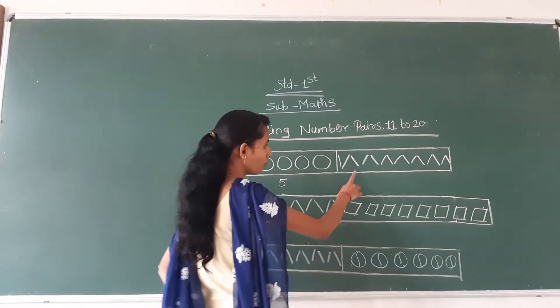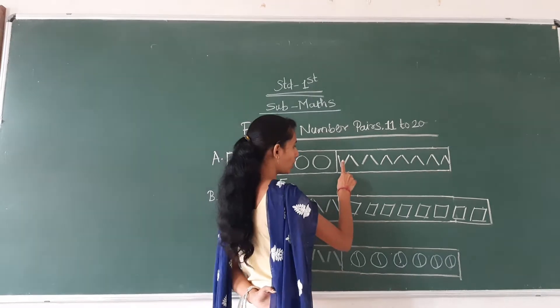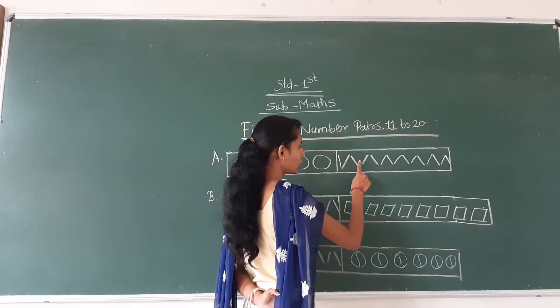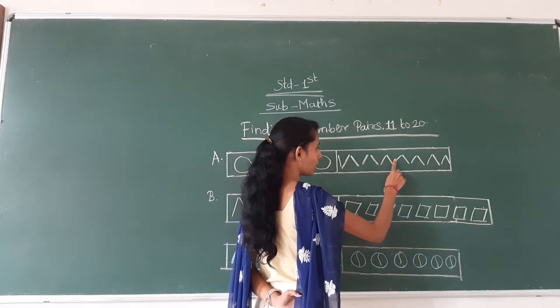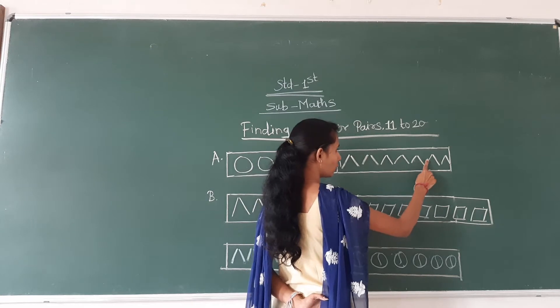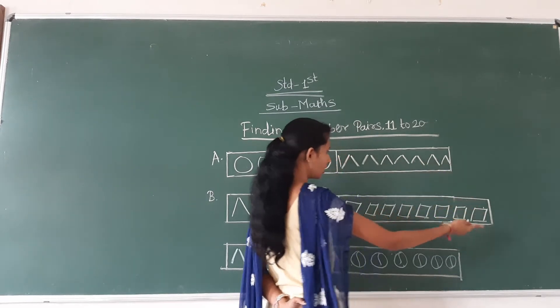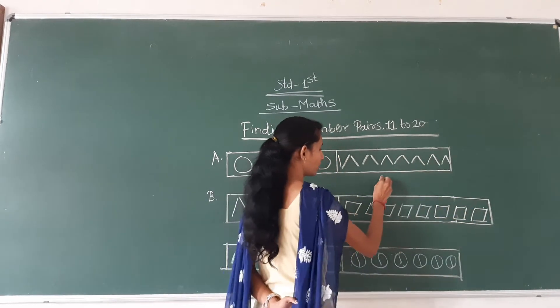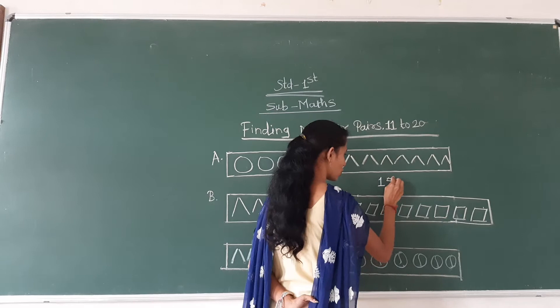And how many lines here? 1, 2, 3, 4, 5, 6, 7, 8, 9, 10, 11, 12, 13, 14, 15. Fifteen lines here.